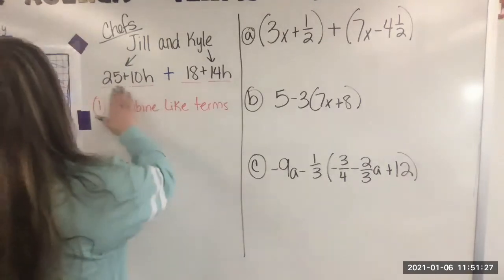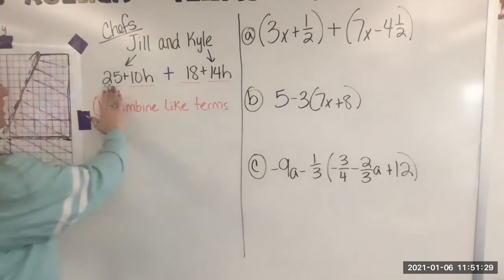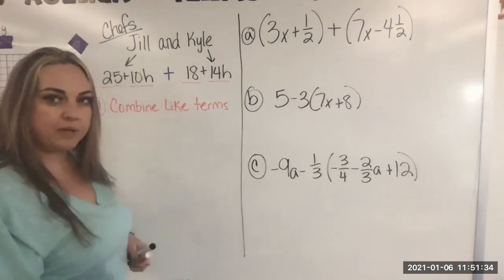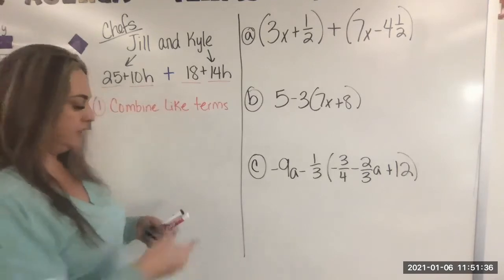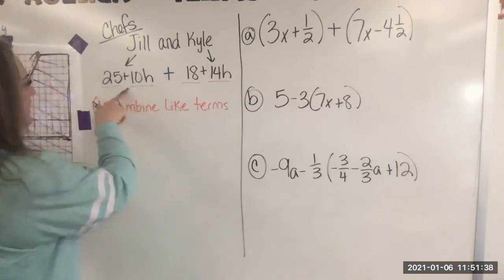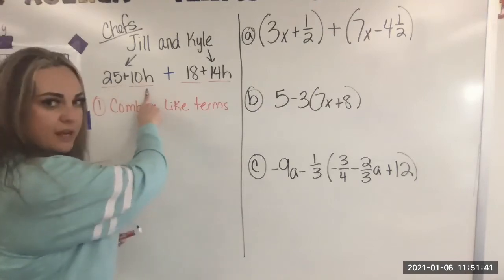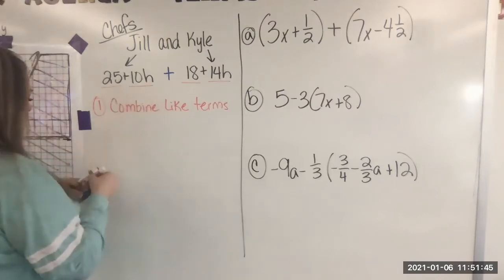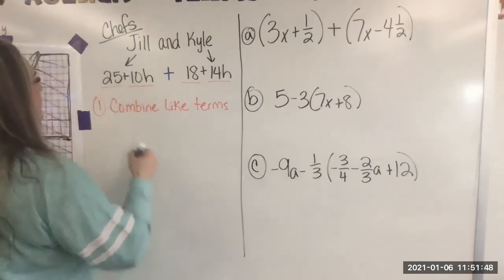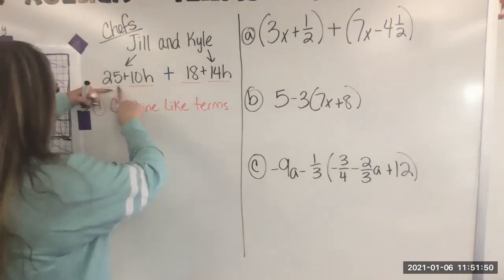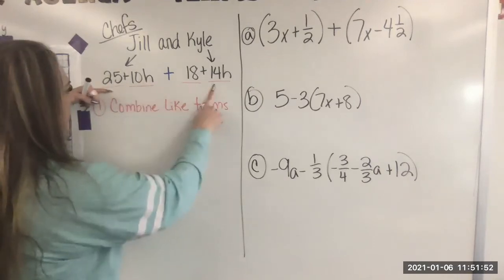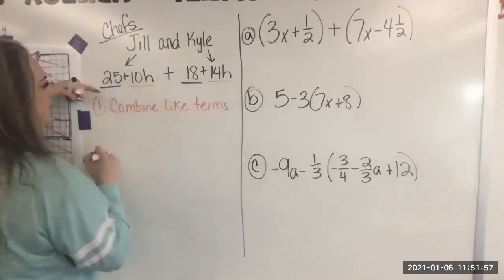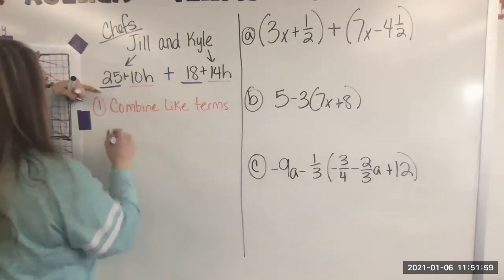So what this is saying is this is just $25. This is $10 per hour. We don't know how many hours Jill has worked. So we cannot add these two together. This one is being multiplied times H and this one is not. This term has an H, this one doesn't, which means we need to look here and look over, look on this side. Can we do 25 plus 18? Yes, those are like terms.